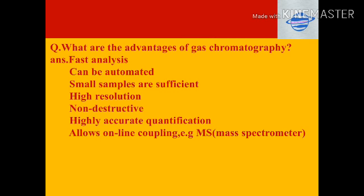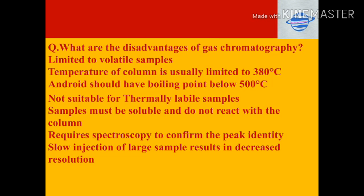Other detectors include mass spectrometer and FTIR. Advantages of gas chromatography: fast analysis, can be automated, small samples are sufficient, high resolution, non-destructive, highly accurate quantification, and allows online coupling — for example, with a mass spectrometer. Disadvantages: limited to volatile samples, and column temperature is usually limited to 380 degrees Celsius.